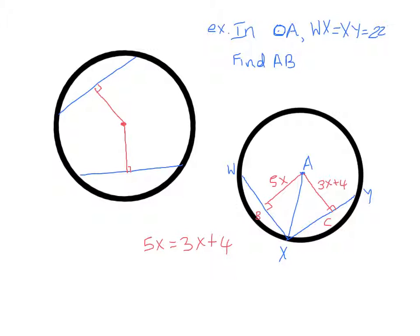Alright, so now we can go ahead and solve our equation. We're going to subtract 3X from both sides. So we get that 2X is equal to 4. And we can divide both sides by 2 to get that X is equal to 2. So there you have it. It really wasn't a very hard question once you know that theorem.